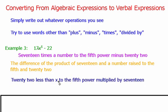A third way we could write this uses 'less than' — remember, whenever we use 'less than,' we are changing places. So 22 goes to the left, 17x to the fifth goes to the right, and we can say '22 less than x to the fifth power multiplied by 17.' It doesn't matter that 17 comes first — it's still being multiplied by x to the fifth power, so I can write it that way. There are literally hundreds of different ways we could write this; I just wanted to give you three. All four of these expressions — the algebraic one and these three verbal expressions — all mean the exact same thing.